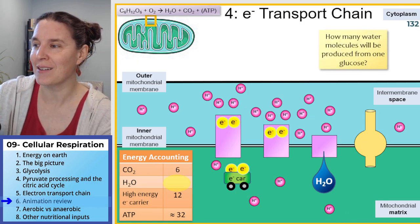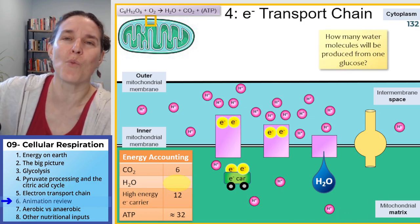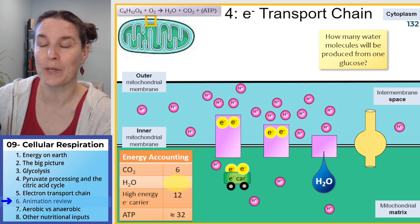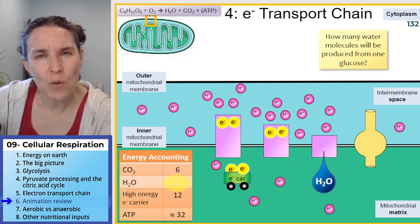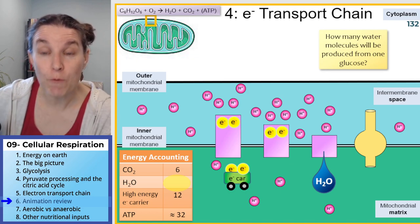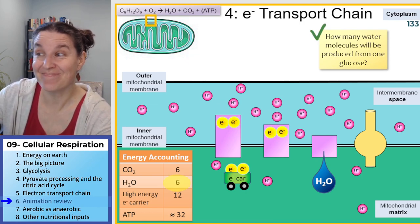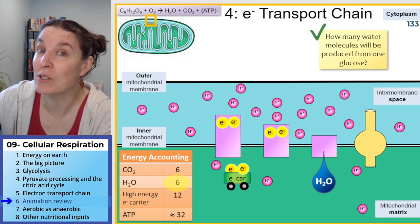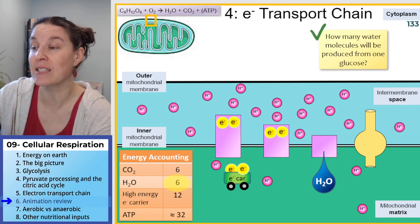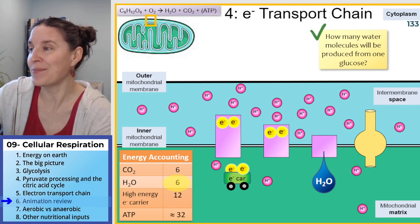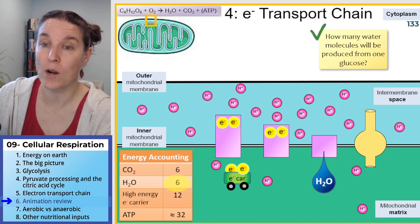How many water molecules do we get from one glucose molecule? Six — balance your chemical equation and we know we need six water molecules. That's true: ultimately, that glucose molecule produces six water molecules.